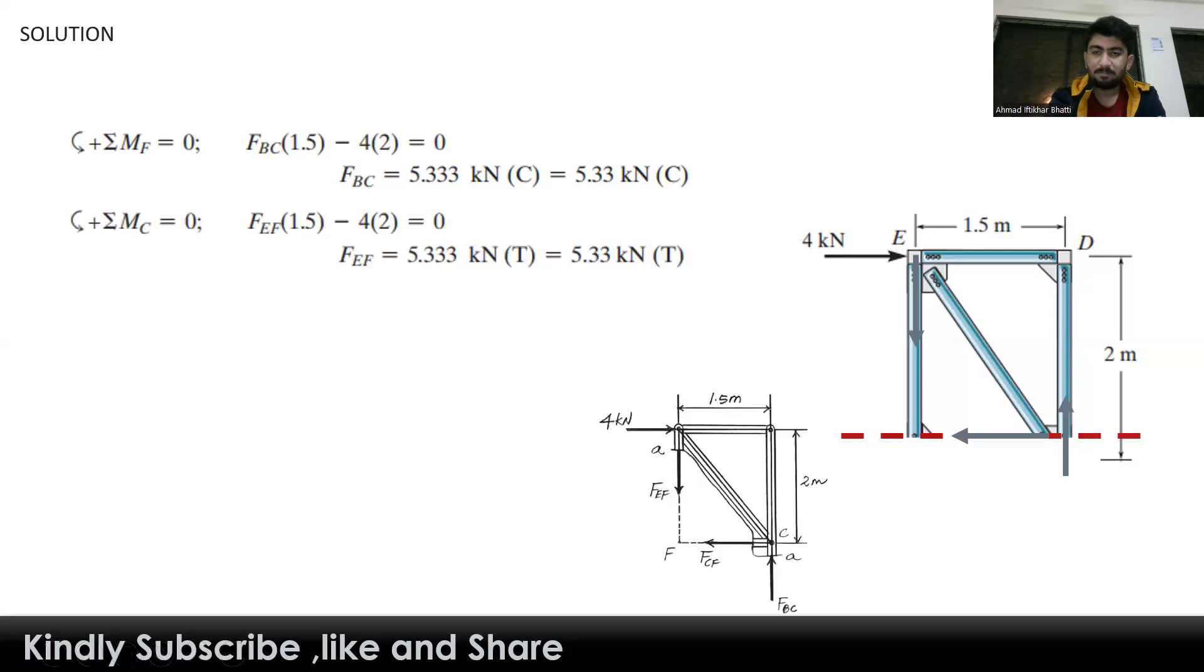The remaining forces are again 4 kilonewtons with a perpendicular distance of 2 meters, which is negative. The force in member EF acts anticlockwise with a perpendicular distance of 1.5 meters from point C. We get the force in member EF as 5.33 kilonewtons in tension.